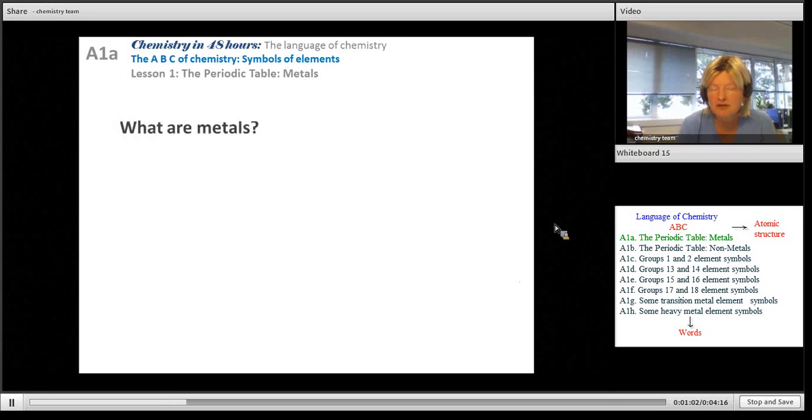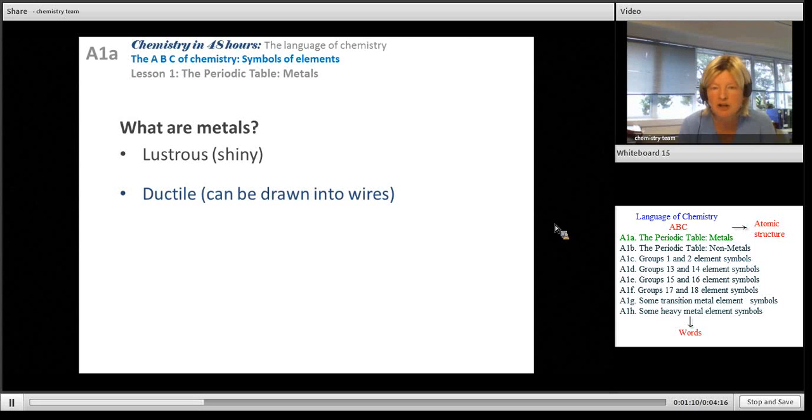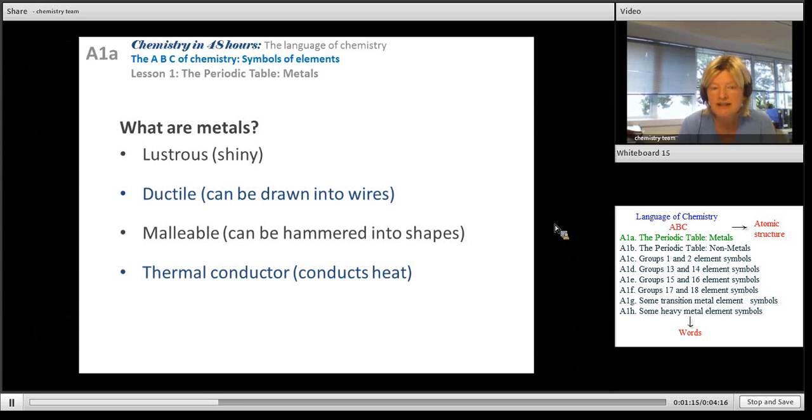Metals have got five properties in common. They are always lustrous once you've shined them up because they can go dull but they will shine up. They are ductile, they are malleable, they are thermal conductors and they are conductors of electricity. Let's look at each of these in more detail.